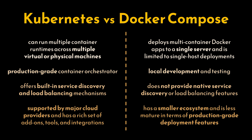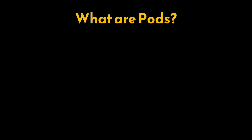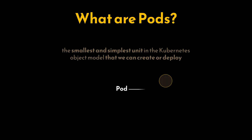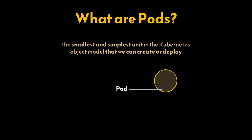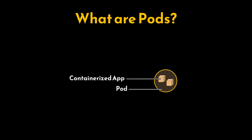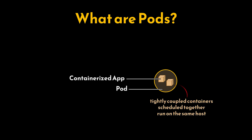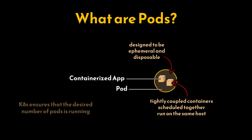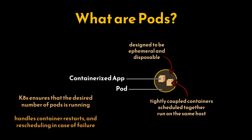Now let's dig into the Kubernetes architecture. To fully understand this, we need to cover one of Kubernetes's main components: pods. A pod is the smallest and simplest unit in the Kubernetes object model that we can create or deploy. A pod represents a single instance of a running process. A single pod can contain one or more containers — such as Docker containers — that are tightly coupled and share the same network namespace, IP address, and storage volumes. These containers are scheduled together on the same host, allowing them to communicate using localhost networking. Pods are designed to be ephemeral and disposable, created, destroyed, and replicated dynamically based on application needs.